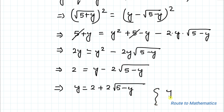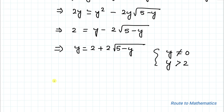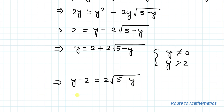From here we can write y = 2 + 2√(5 - y). We assume y is not equal to 0, and the value of y must be greater than 2. In the next step, taking 2 to the left-hand side, we have y - 2 = 2√(5 - y).